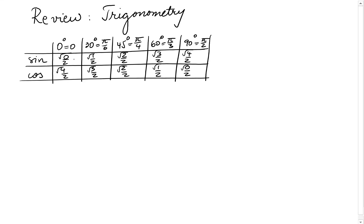Square root of 0 over 2 is 0. Square root of 1 over 2 is 1 half. Square root of 2 over 2 we just leave it like that, and the same with square root of 3 over 2. Square root of 4 is 2 divided by 2 is 1. The ones in red are the actual values you want to remember.